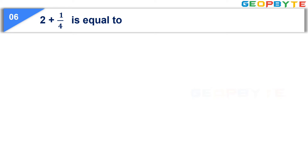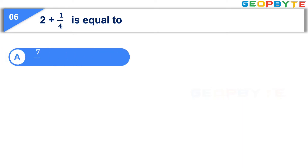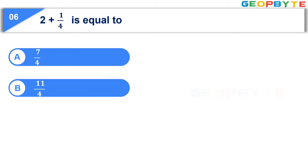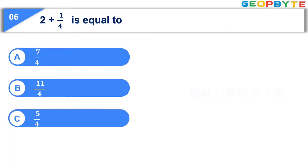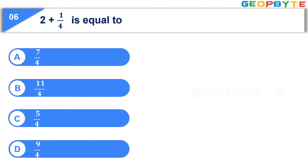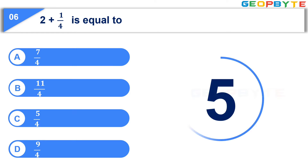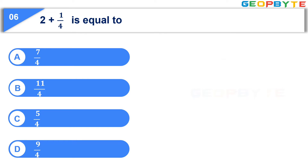The sixth question is, 2 plus 1 by 4 is equal to: option A, 7 by 4; option B, 11 by 4; option C, 5 by 4; option D, 9 by 4. Your time starts now. Your time is up and the correct answer is option D, 9 by 4.